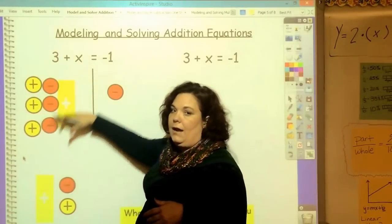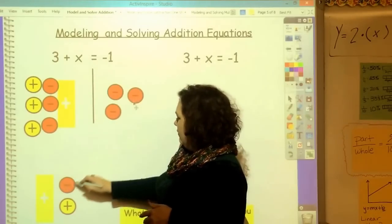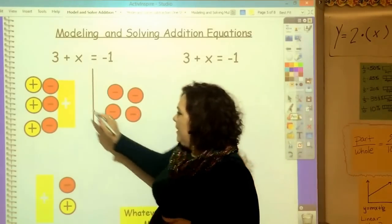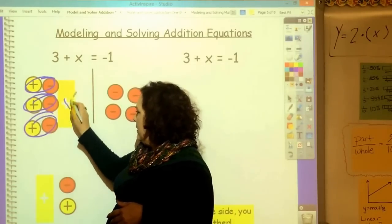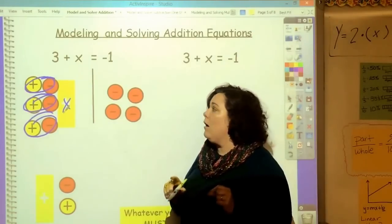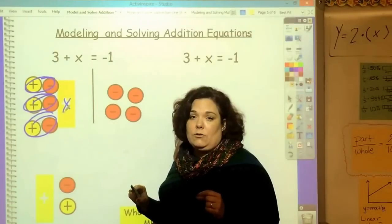And whatever I do to this side, I have to do to this side. 1, 2, 3. So, now, I have my zero pairs, zero pair, zero pair, zero pair. x equals 1, 2, 3, 4. Negative 4. So, let's look at this. 3 plus negative 4 equals negative 1. Yes, that's true.